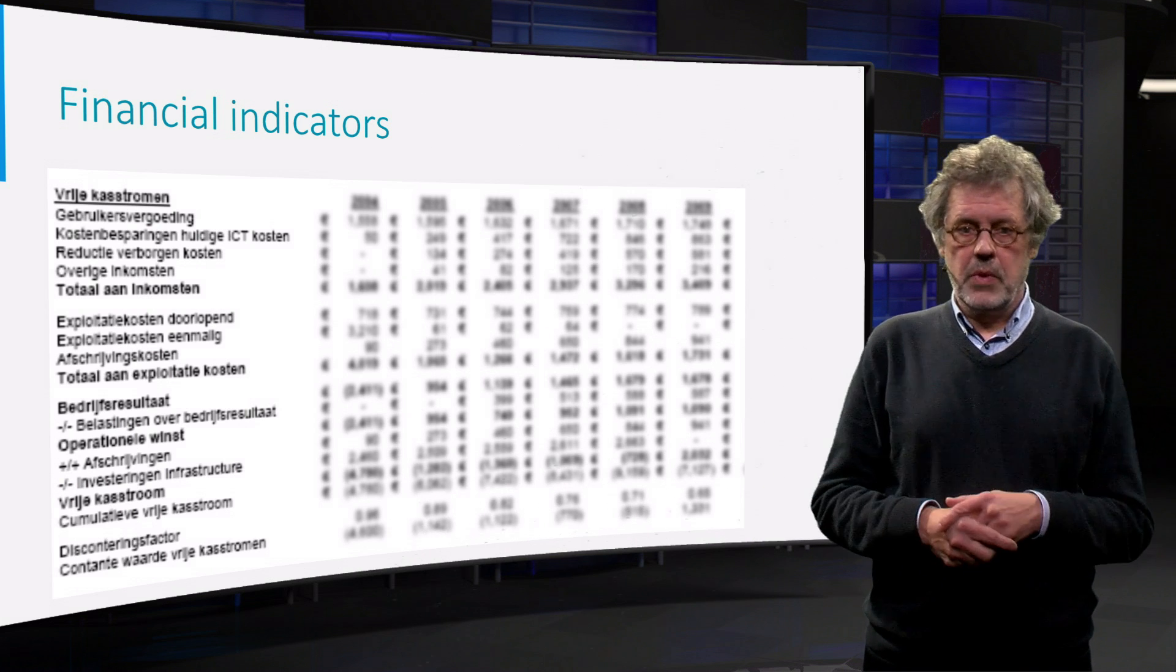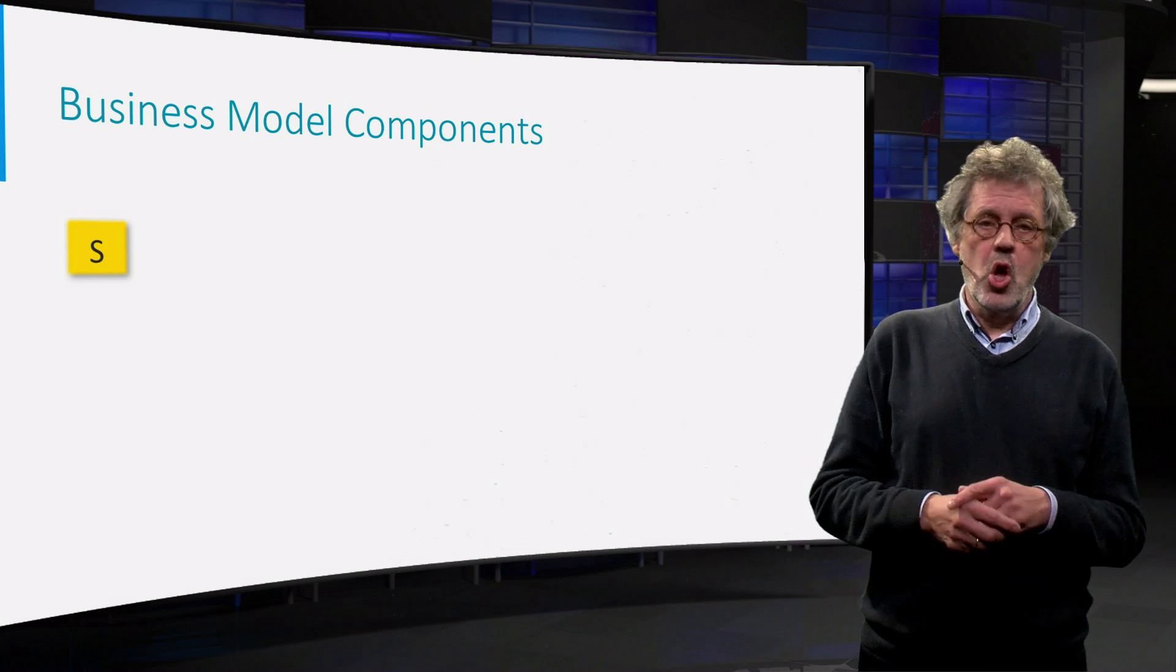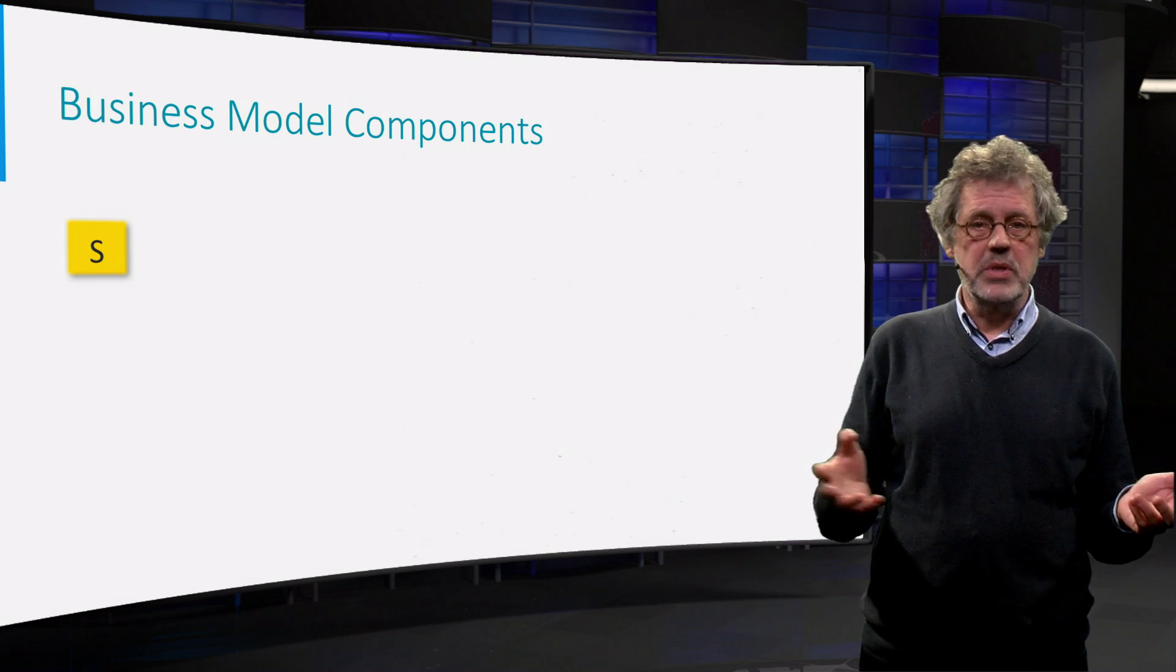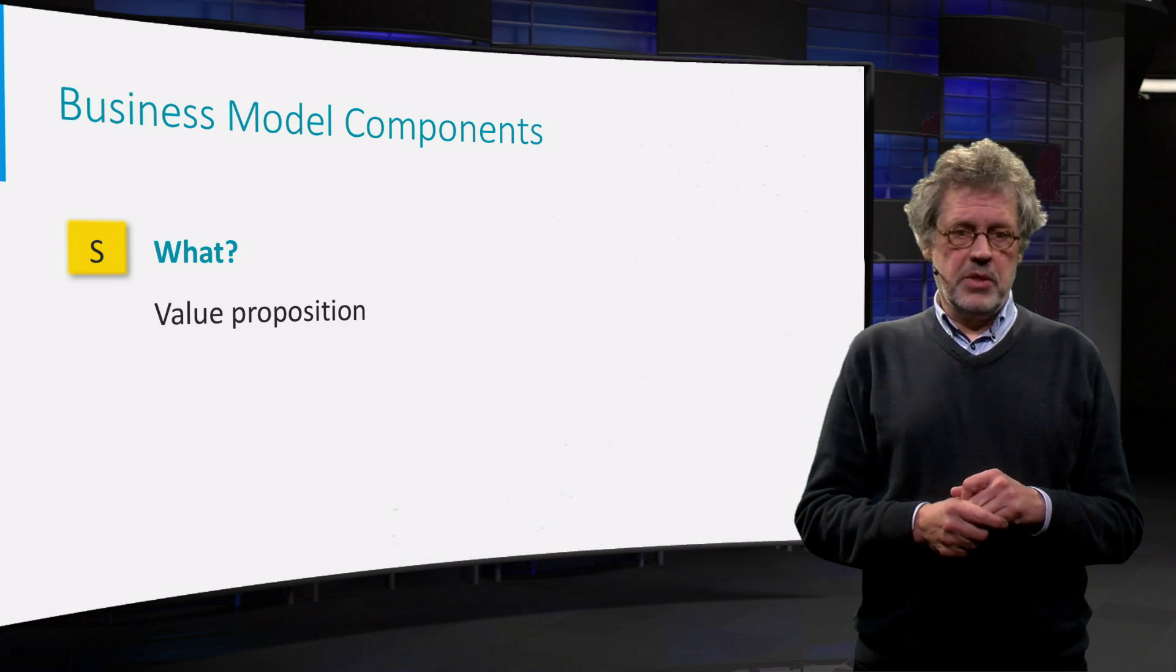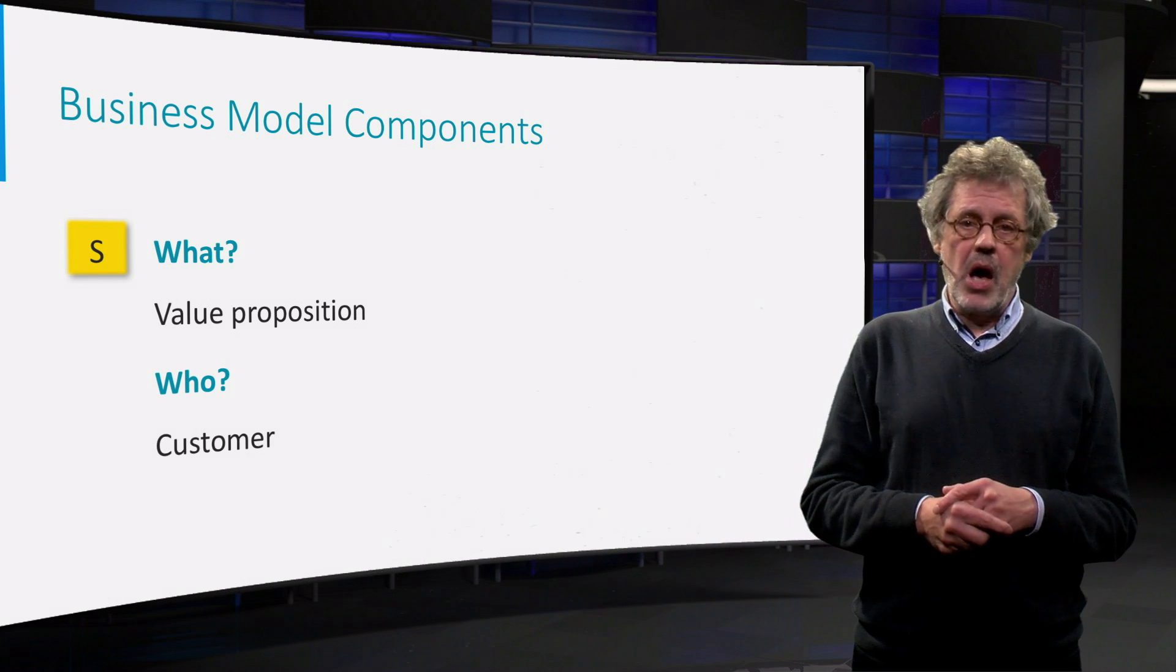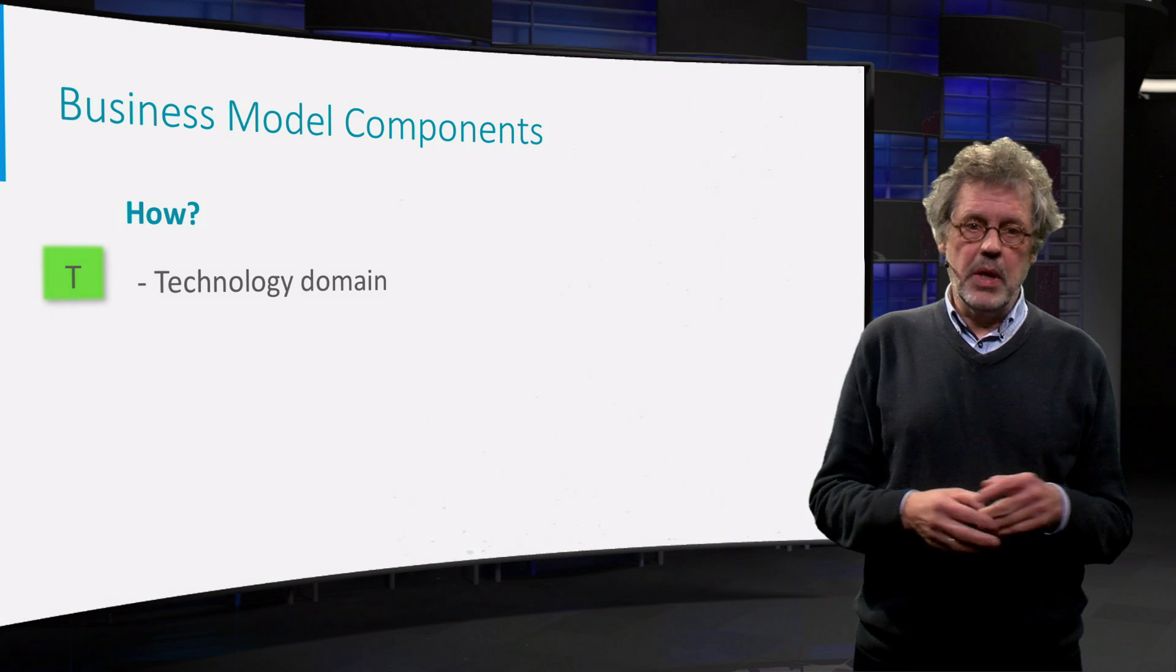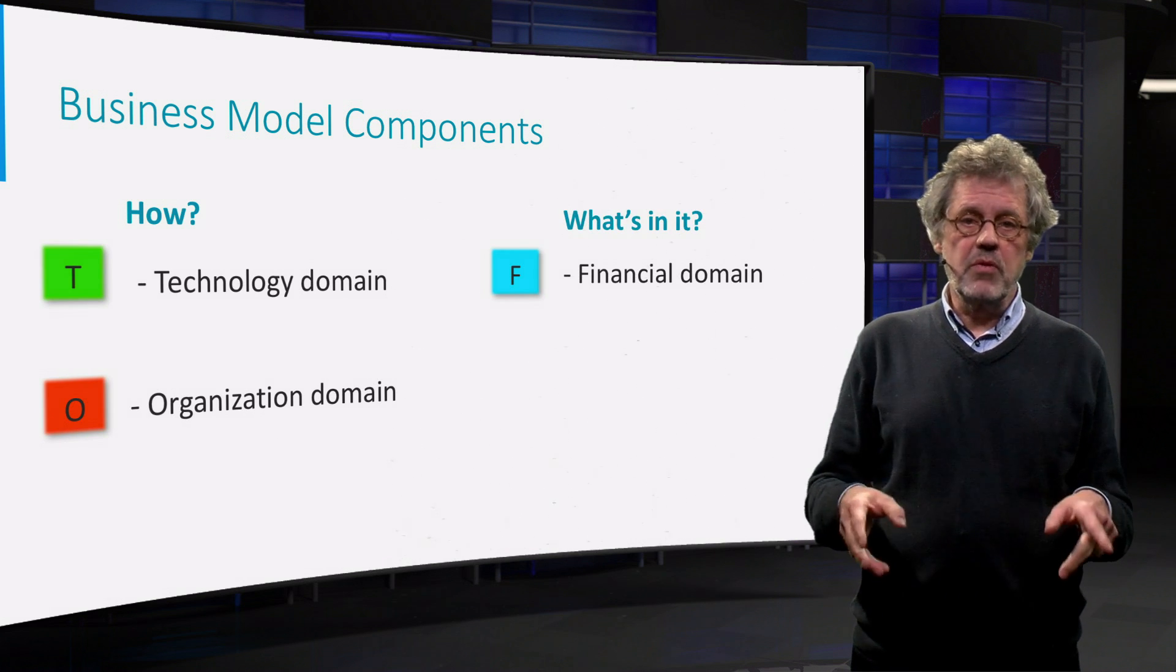But there is more. So we start again with the core business model questions: what, who, how, and what's in it. The what question concerns the value proposition. The who question is related to customers. The how question covers technology and organization aspects. And the what's in it question is related to financial issues.